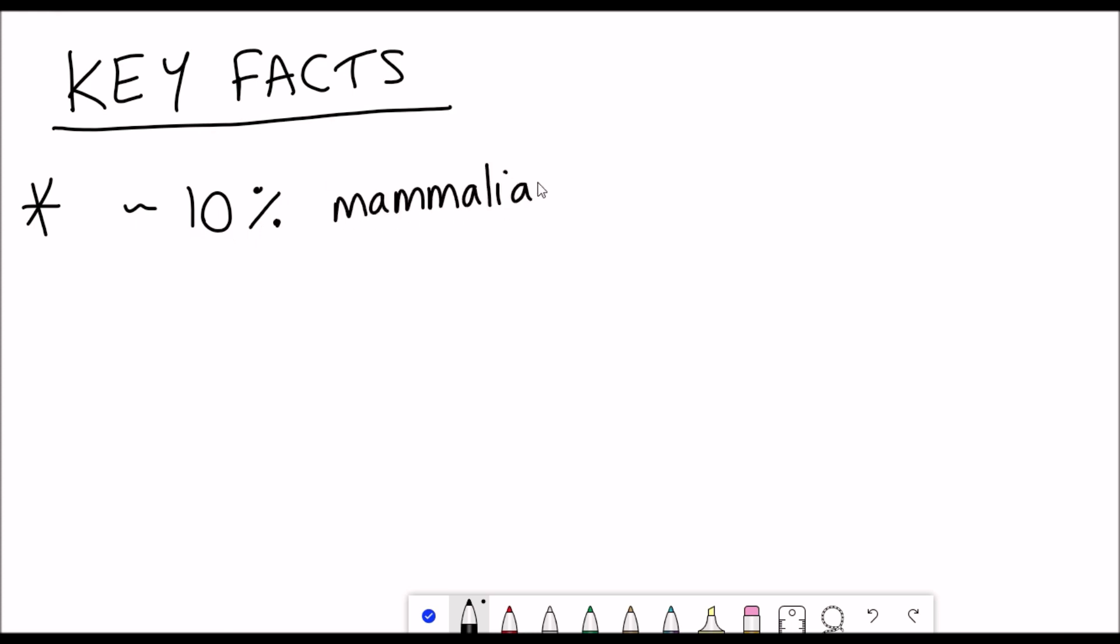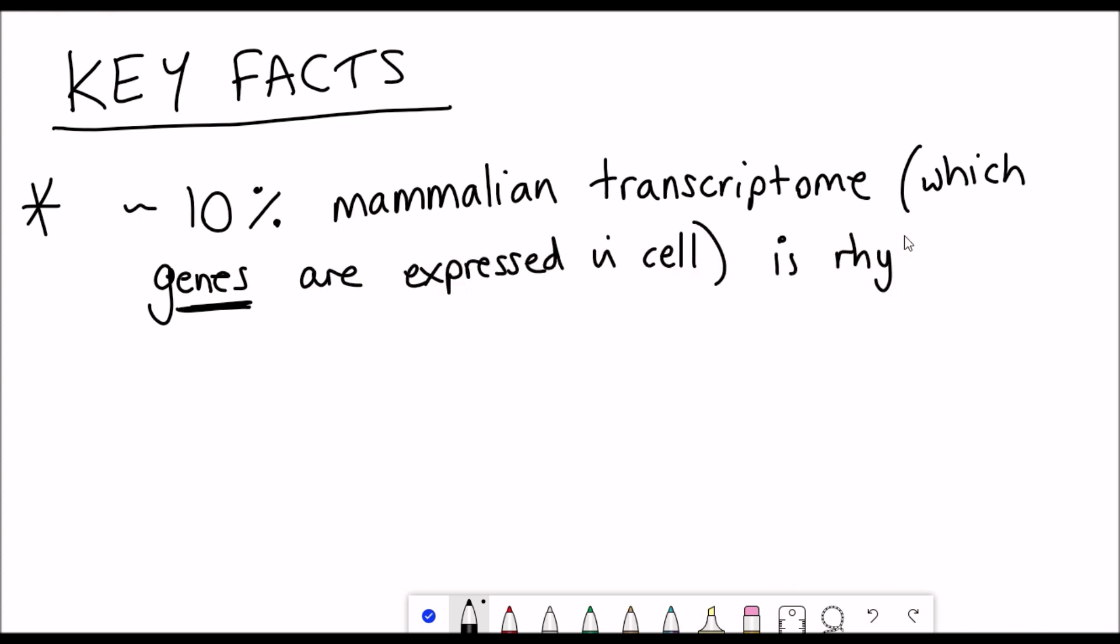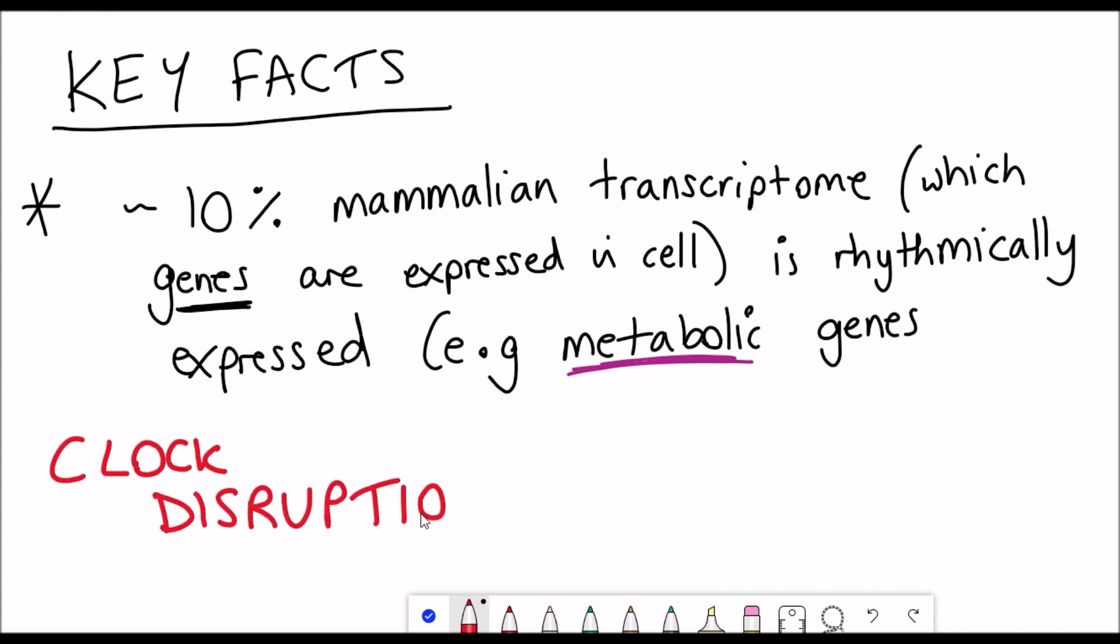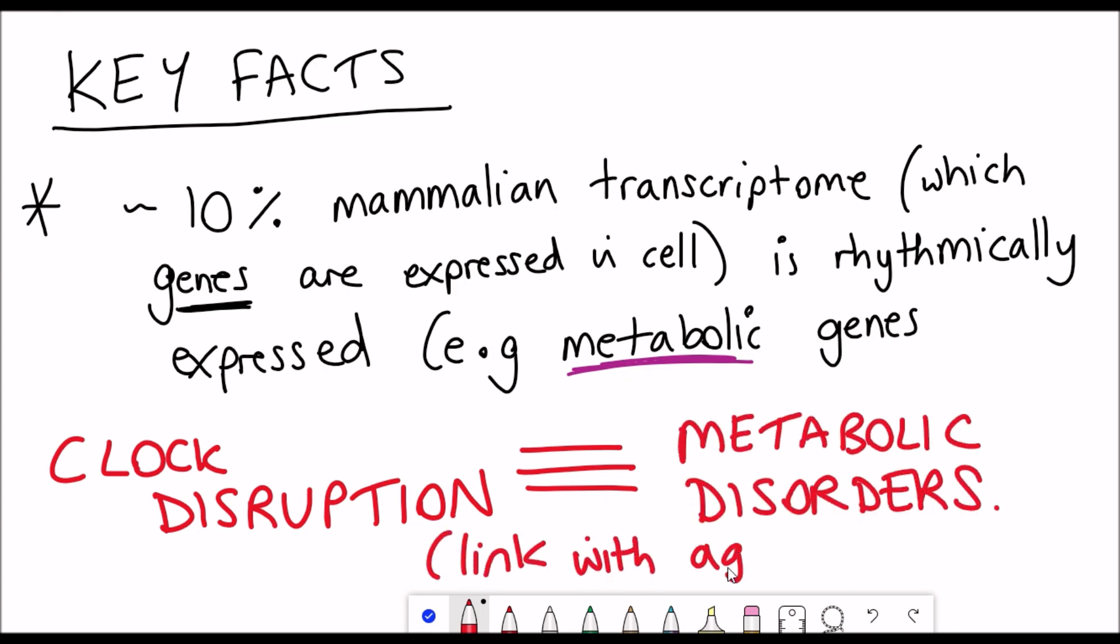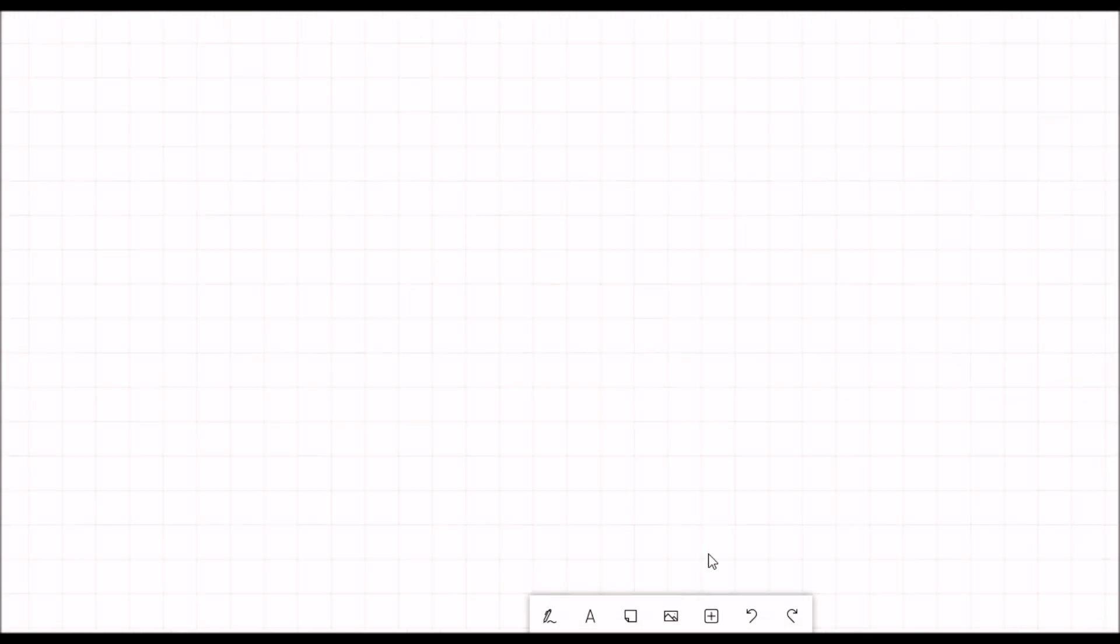Why is the circadian clock so important to understand? Well, around 10% of the mammalian transcriptome, that is, genes that are expressed within a cell, is rhythmically expressed. Some of these genes include metabolic genes. Knowing this fact, maybe it's not surprising that clock disruption is associated with metabolic disorders, such as obesity. And it's also associated with ageing.